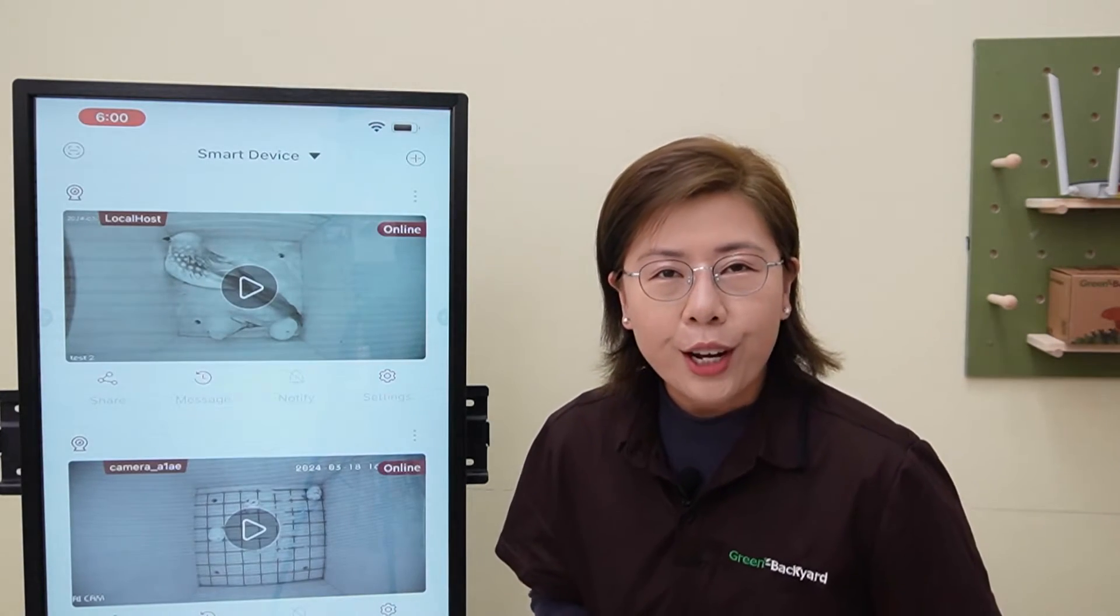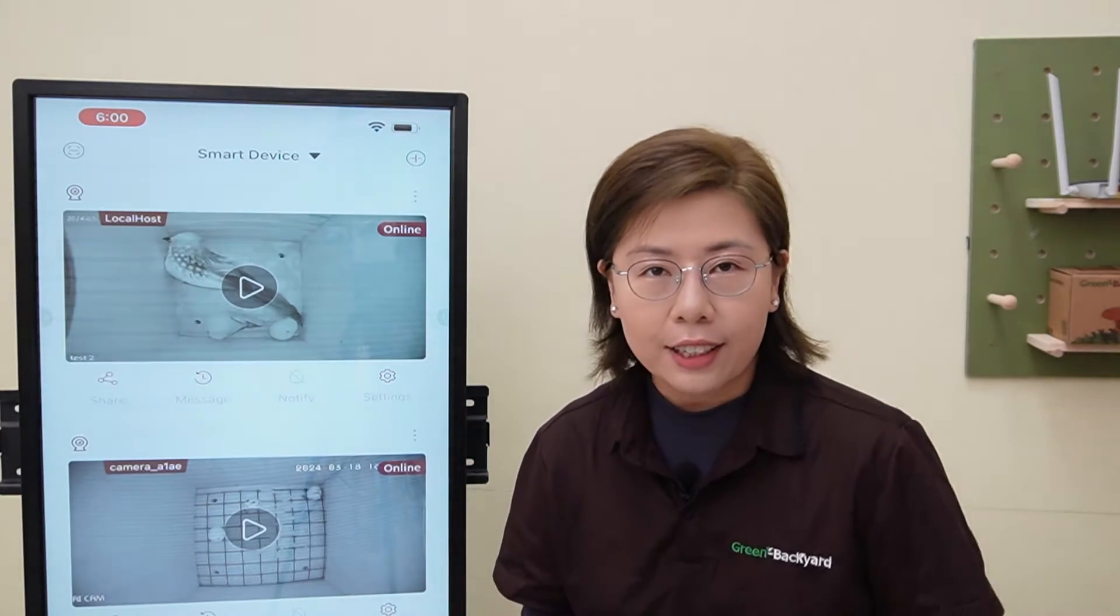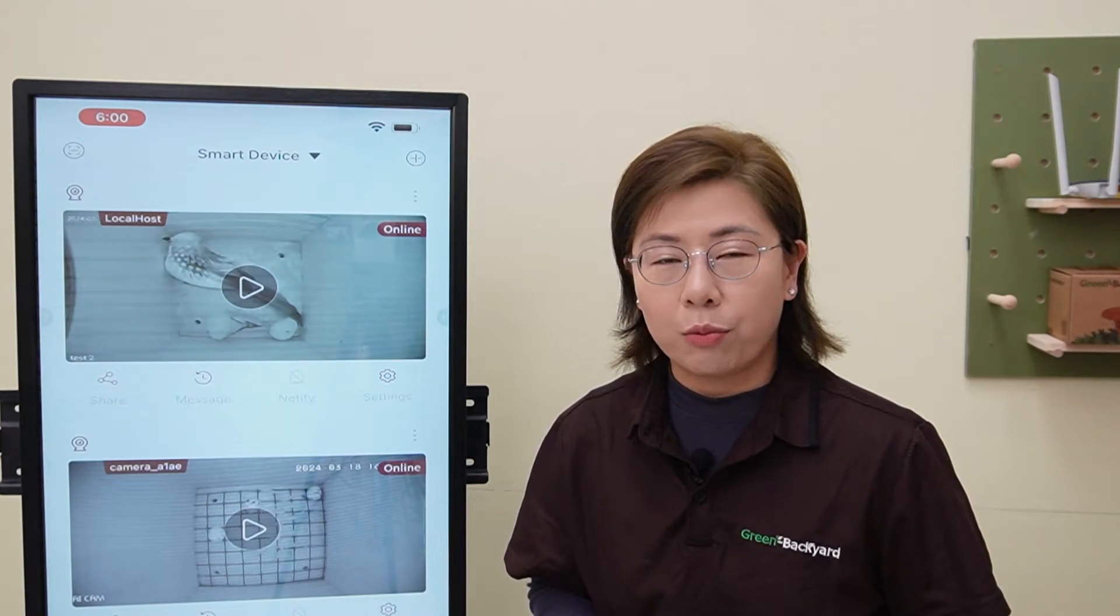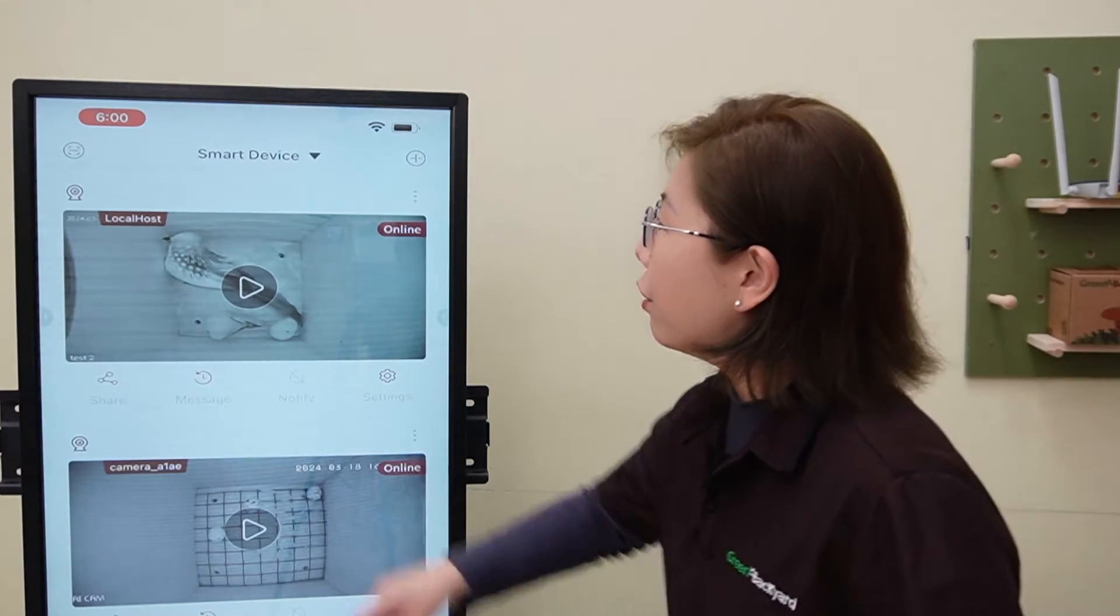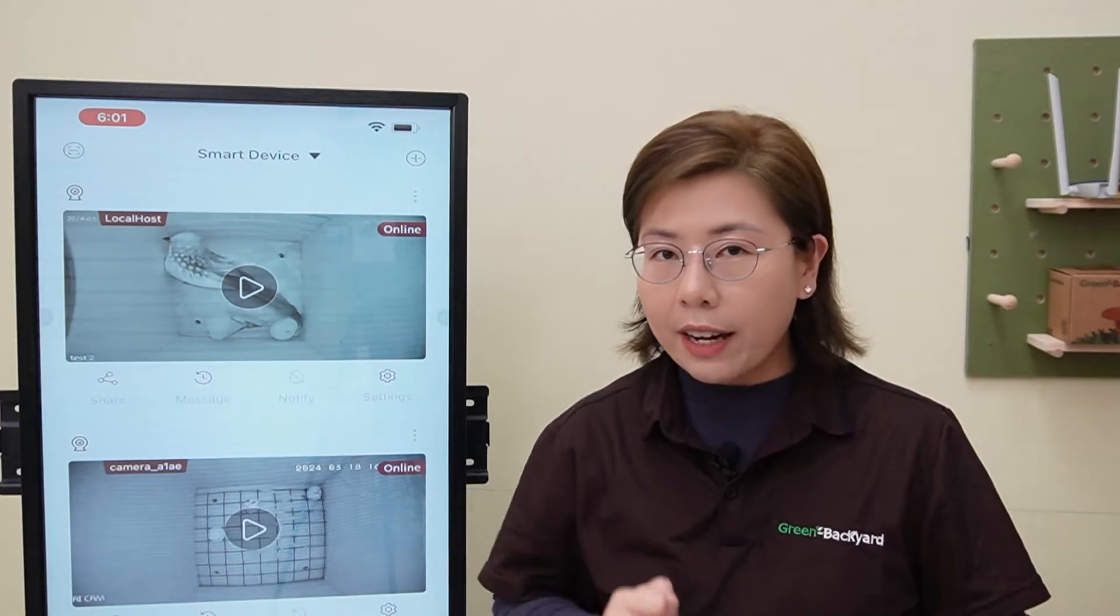Or method 2, you can share your live bird box camera access directly to your friends and family. But first, they'll need to download our Green Backyard application as well and scan the QR code that you share. They can use the scan feature on the upper left hand corner. And where can you find the QR code?